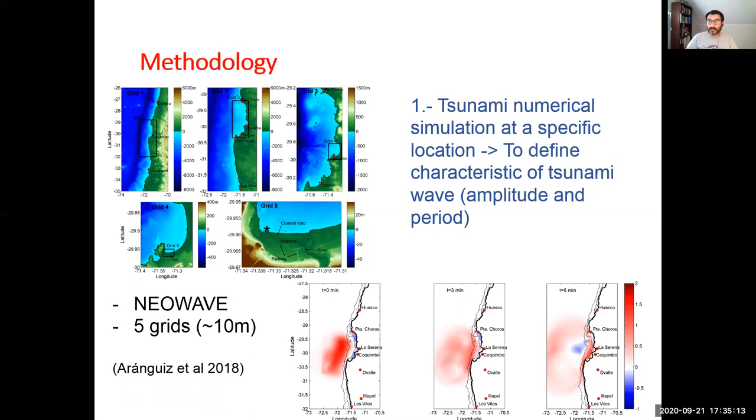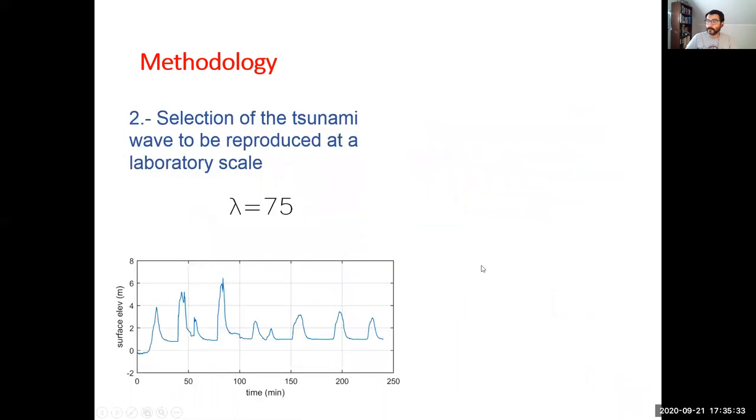Here we can also see a snapshot of the tsunami propagated from the generation area to the coastline. It is seen that in six minutes approximately the tsunami can reach the coast. In the second step we selected the tsunami wave and we observed that the third wave is the maximum or the most dangerous wave.